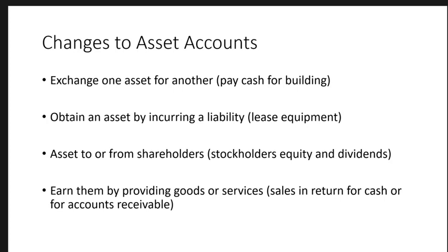Now we're talking about how we get to those amounts — how did we go from having zero assets, because every business starts with zero, to the numbers and kinds of assets we show on the balance sheet? There are really only four ways that we can have a change to an asset account. First, we can exchange one asset for another — one asset goes up and the other goes down, so total assets stay the same but individual assets shift around.